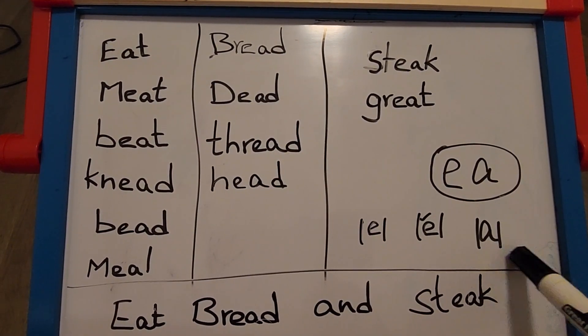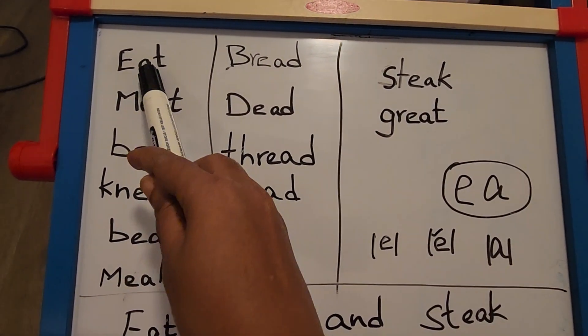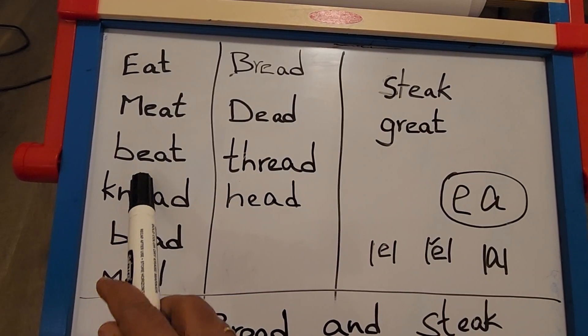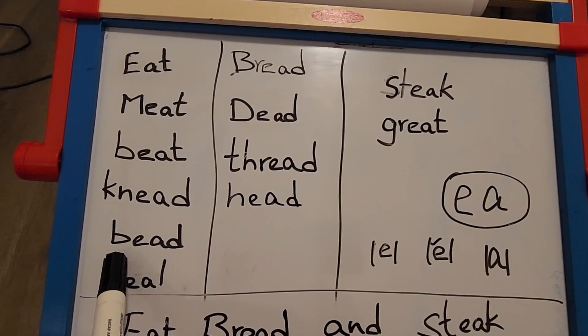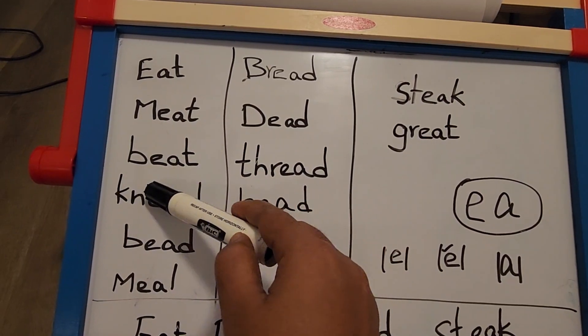Long E sound examples: eat, meat, beat, knead, bead, meal. These are all long E sound with EA together.